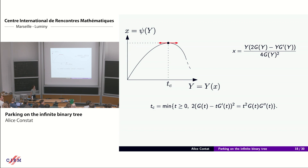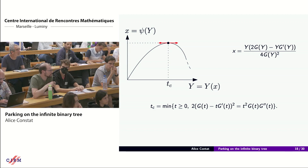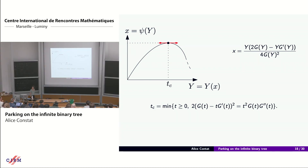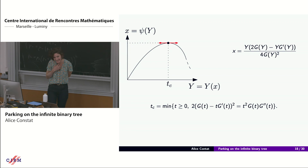Question: in the infinite binary case, is there a law for car arrivals such that the functional equation enumerates some maps? Good question — possibly Poisson, but I'm not sure and would need to check.